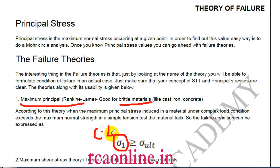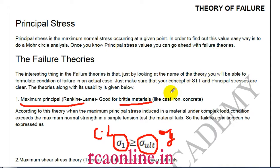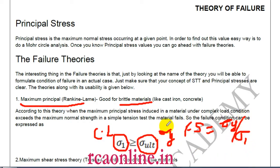What this theory says: if sigma one is the maximum stress from complex loading and sigma ultimate (or sigma y) is from a simple test, then we take the maximum principal stress. If sigma one is greater than or equal to sigma y, failure will take place. The factor of safety is sigma y divided by sigma one — sigma y from the simple test is always in the numerator.